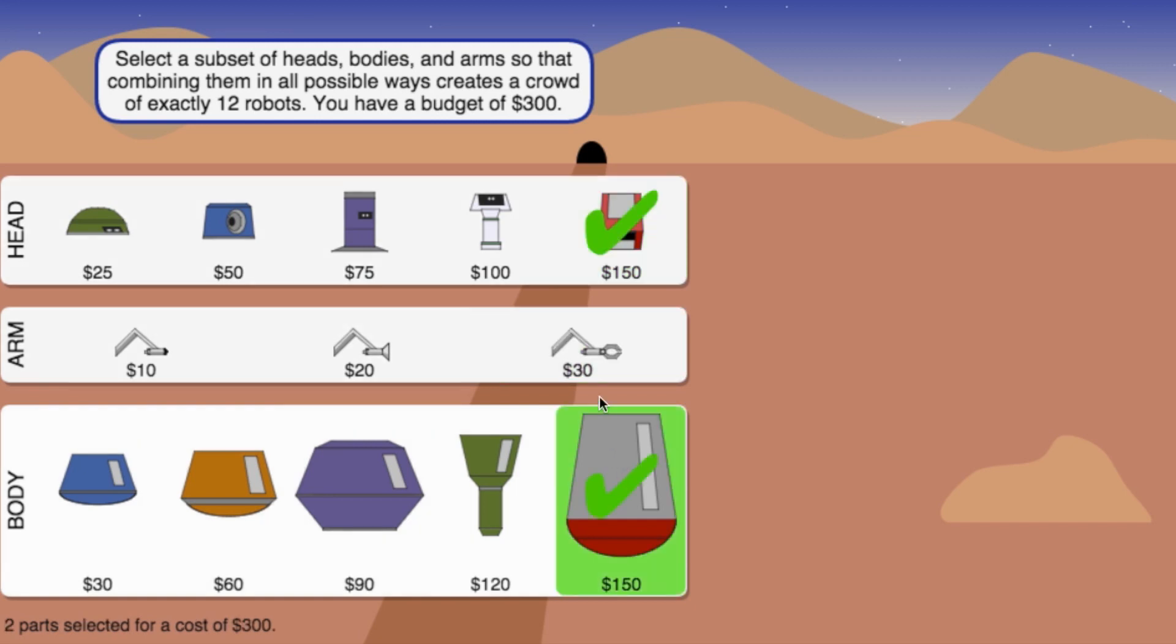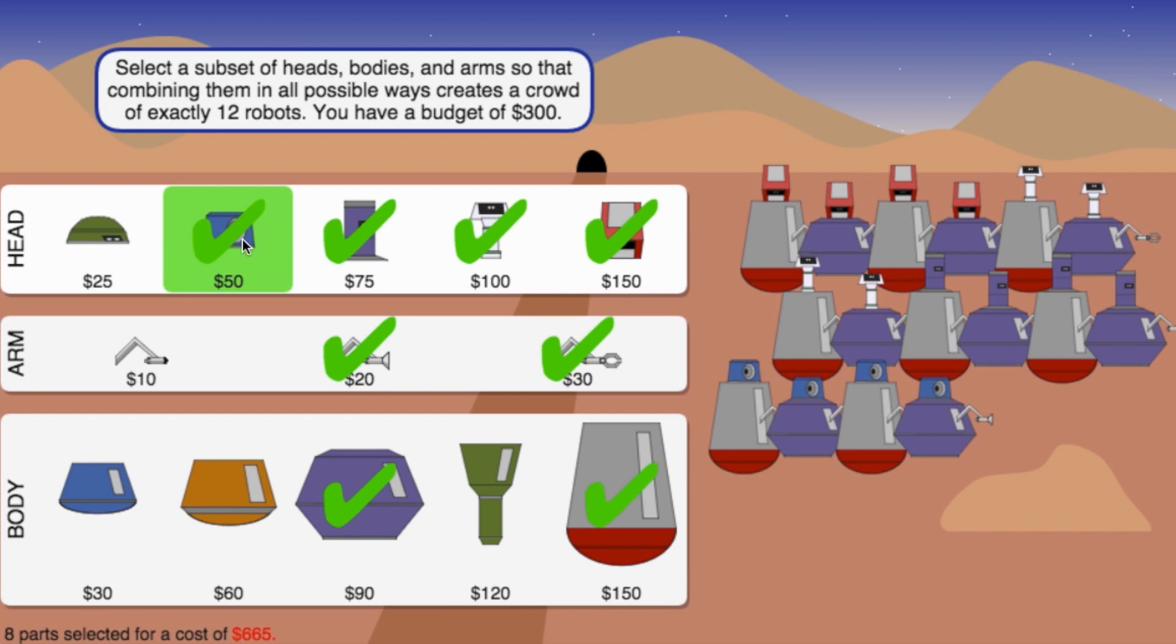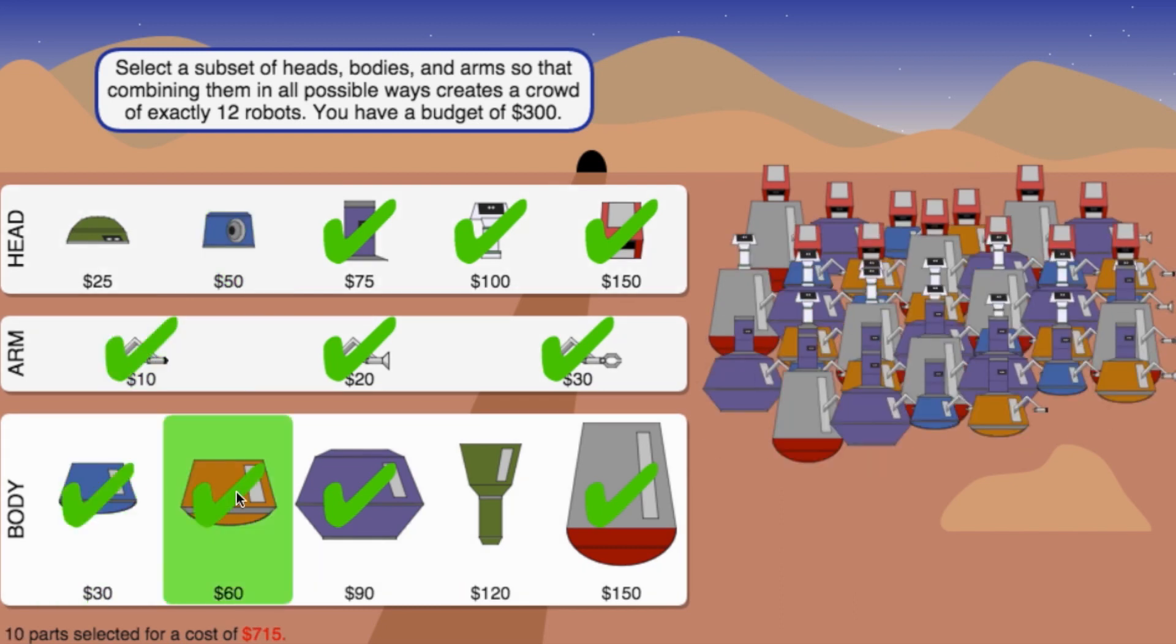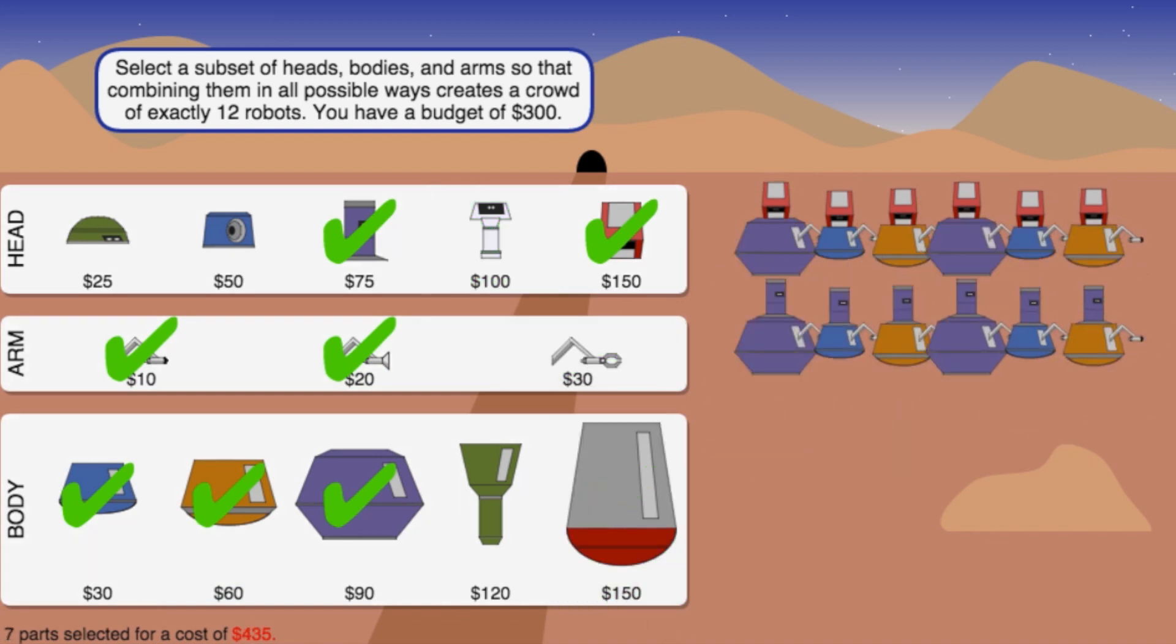Select a subset of heads, bodies, and arms, so that combining them in all possible ways gives exactly 12 robots. And the cost of all the parts must be below $300. The director and producer will be here in 10 minutes to review your work. I know you got this.